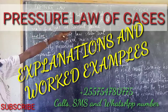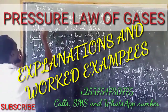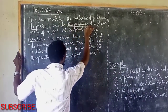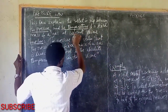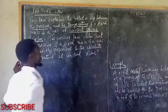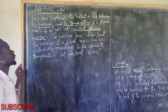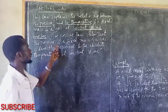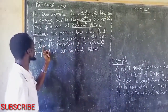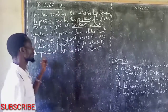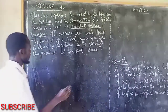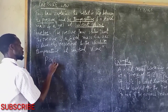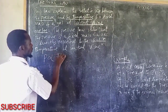This explains the relationship between the pressure and the temperature at the constant volume of a fixed mass of a gas. Therefore, the pressure of a fixed mass of a gas is directly proportional to the absolute temperature at constant volume. Mathematically, the pressure is entirely proportional to the absolute temperature.